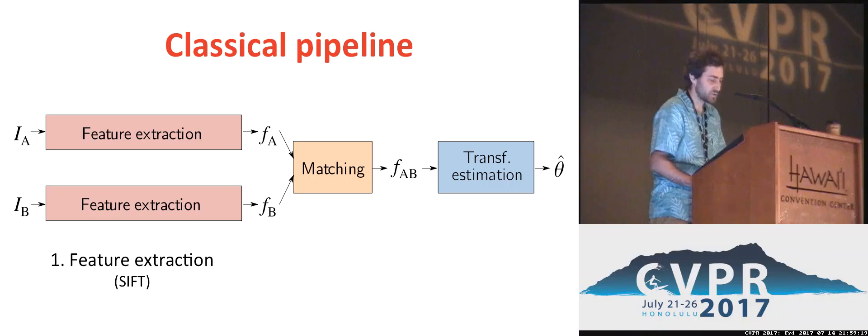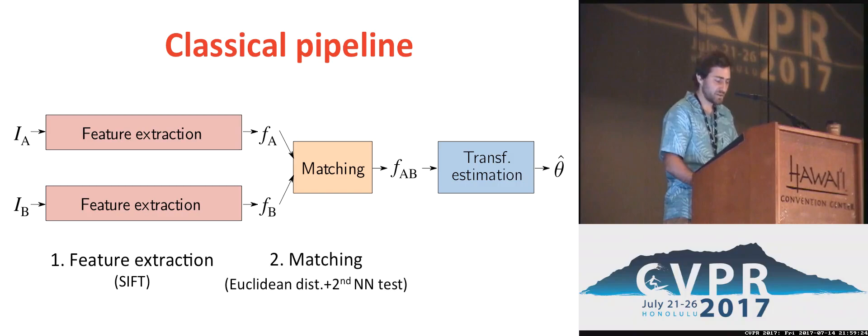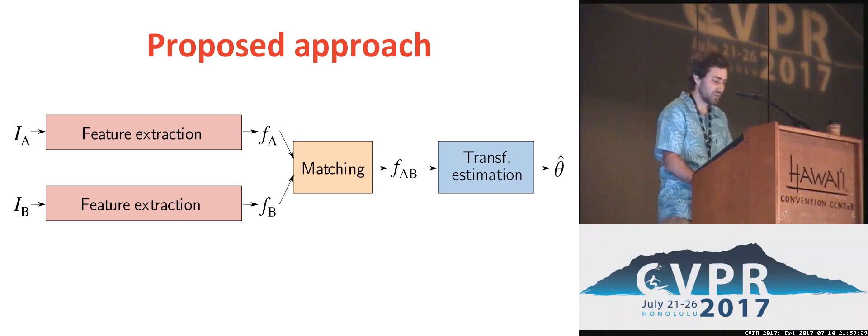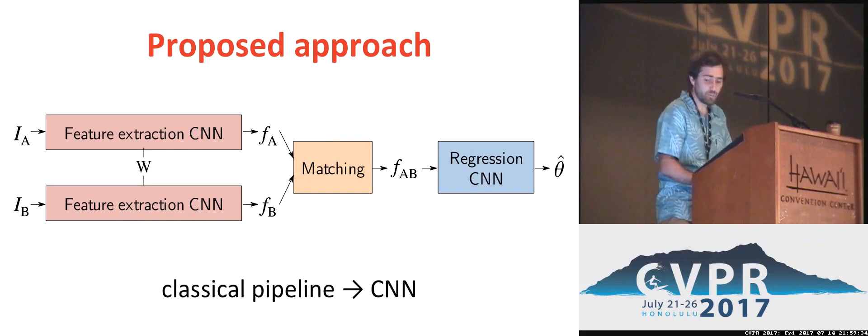We base our approach on the classical image correspondence pipeline, which consists of three main steps: feature extraction, matching, and transformation estimation. In this work we use the same three steps, but each block is implemented using differential operations such that the whole pipeline is trainable end-to-end.